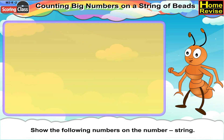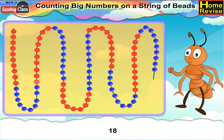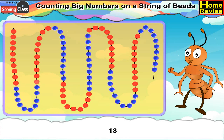Show the following numbers on the number string. Number 18. For number 18, first we will see the 10 red beads. Then after that, we will count 8 blue beads and place a clip after 8 blue beads. We get number 18.